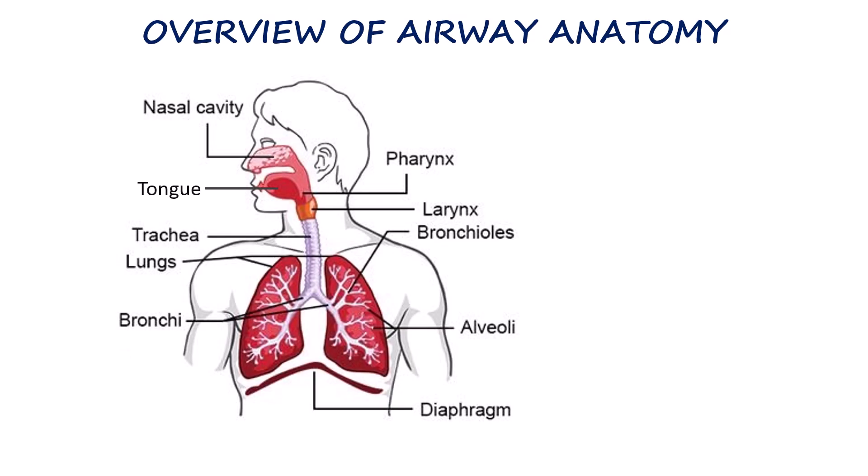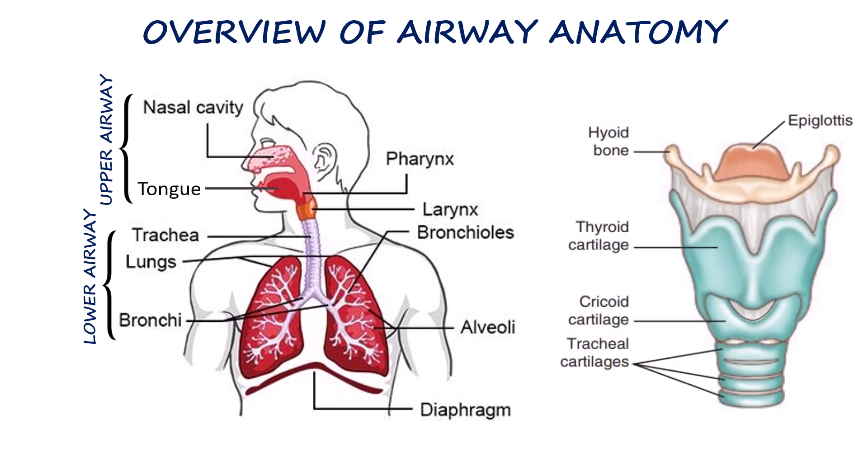The airway is divided into the upper and lower portions. The upper airway includes the nasal cavity, oral cavity, pharynx and larynx. The lower airway begins at the trachea and extends to the bronchi and alveoli. Key landmarks include the tongue, epiglottis, vocal cords and cricoid cartilage.